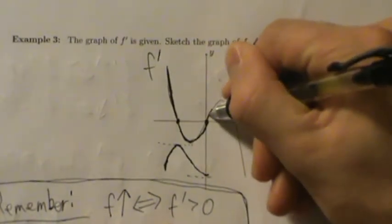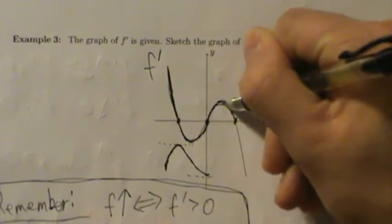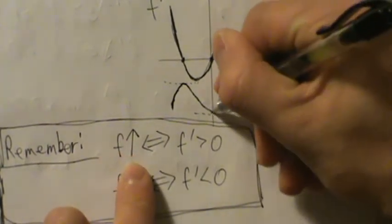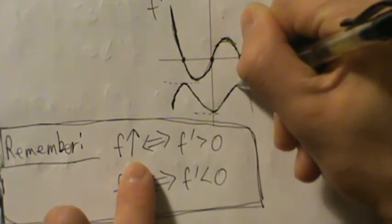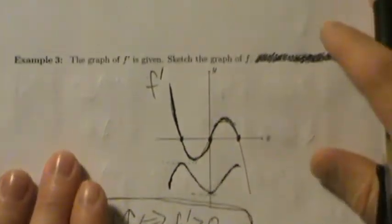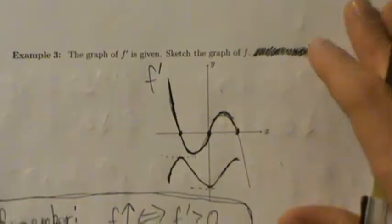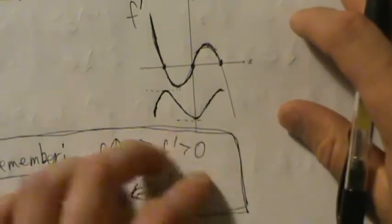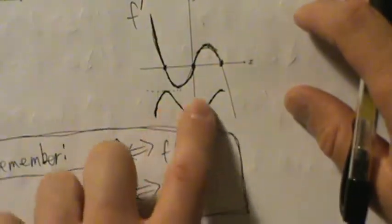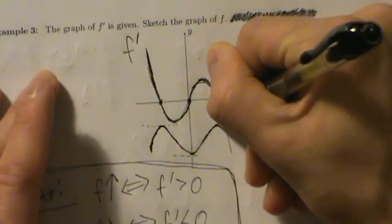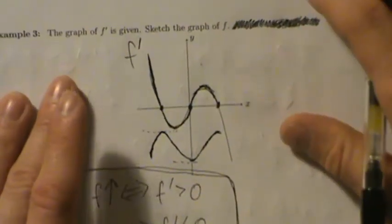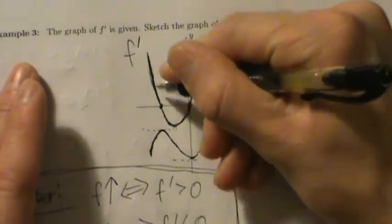And then f' is positive again and then zero again. So f' is positive this whole time and then zero again, which means f is increasing. We do kind of want to make this like a mirror image because f' kind of has this odd symmetry — symmetric over the origin. So f' looks like an odd function, and actually f we might expect to be even. f' is nice and symmetric like this, so we expect f to be similar.